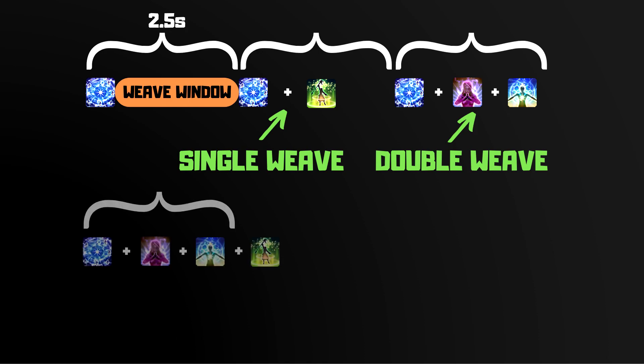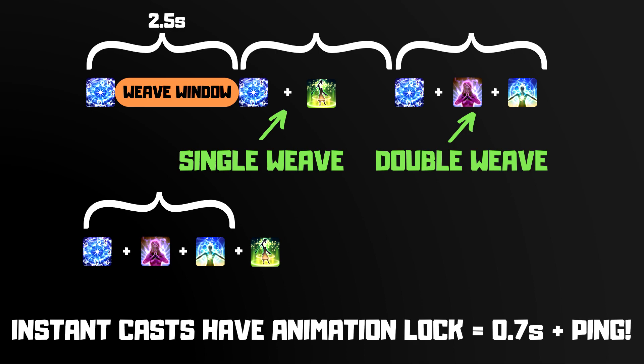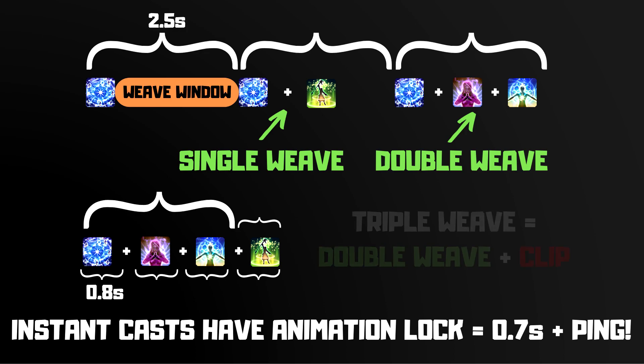Weaving one ability with an instant cast is called a Single Weave, while weaving two is called a Double Weave. Is it possible to Triple Weave or more? Unfortunately, no. While tooltips indicate that OGCDs have instant cast time, in reality we endure about 0.7 seconds of Animation Lock while using them, and this gets longer with higher ping. For example, at 100ms ping, Animation Lock is about 0.8 seconds. A Single Weave takes about 1.6 seconds, while a Double Weave takes about 2.4 seconds — including the instant cast spell's own animation. A Triple Weave would take 3.2 seconds, which is longer than our GCD length. A Triple Weave is actually just a Double Weave plus a clip in disguise: the first two OGCDs don't delay your GCD, but the third one does.